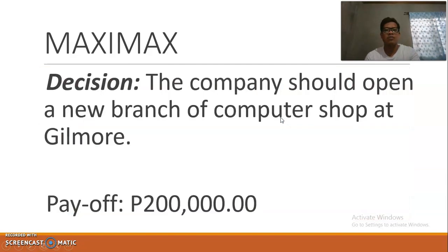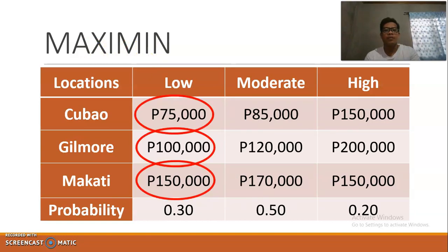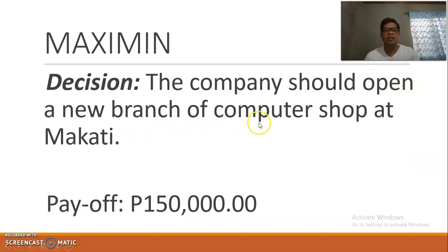For Maximin — the maximum among minimums — we get the minimum payoff for each alternative. For Cubao the minimum is 75,000; for Gilmore 100,000; for Makati the minimum payoff is 150,000. Among these minimums the maximum payoff is 150,000, so the company should open a new branch at Makati.